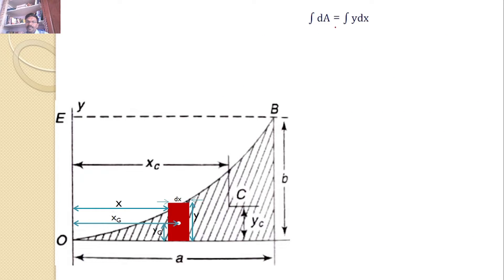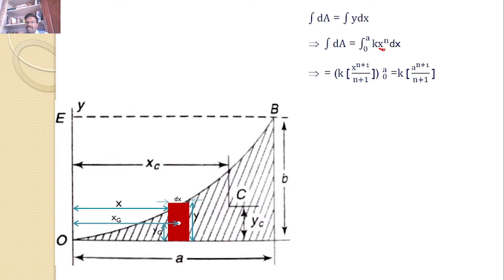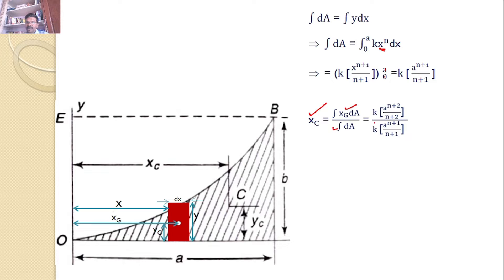Next, we calculate the denominator ∫DA = ∫Y·DX, where Y = K·X^N. Integrating X^N gives X^(N+1)/(N+1), evaluated from 0 to A, yielding K·A^(N+1)/(N+1). Substituting both numerator and denominator into XC = ∫XG·DA / ∫DA and simplifying, we obtain XC = (N+1)/(N+2)·A.